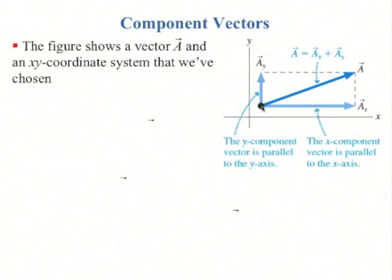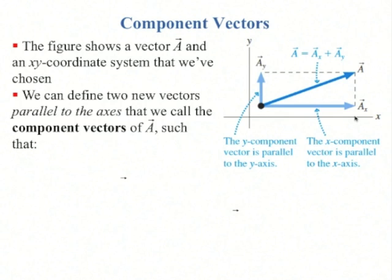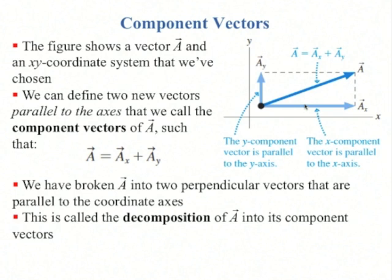Suppose we have a vector a on a coordinate system, y and x. We can define two new vectors, a sub y and a sub x, such that a is the sum of a sub x plus a sub y. Here's these two vectors added, showing the parallelogram rule. What we say here is that we've broken this vector, or decomposed this vector into its perpendicular components.